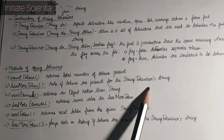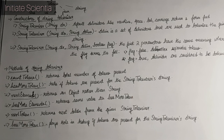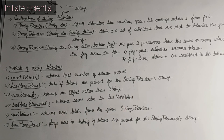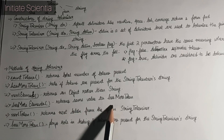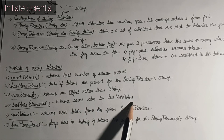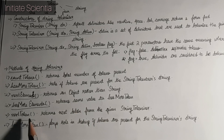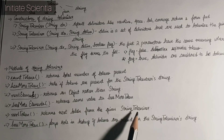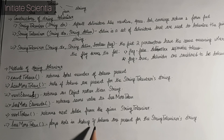Methods of StringTokenizer: countTokens() returns the total number of tokens present. hasMoreTokens() tests if tokens are present for the StringTokenizer's string. nextElement() returns an object rather than a string. hasMoreElements() returns the same value as hasMoreTokens(). nextToken() returns the next token from the given string tokenizer.